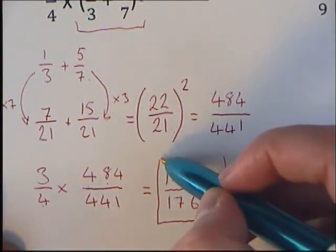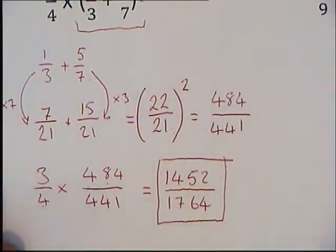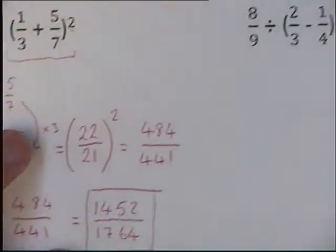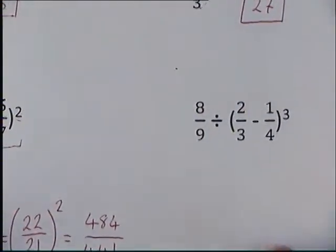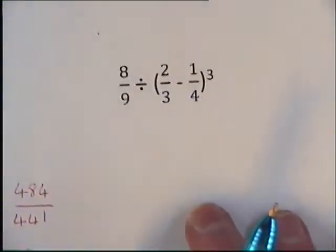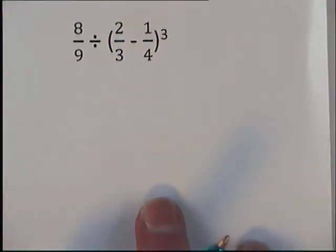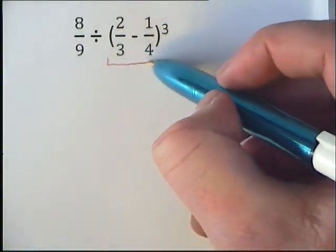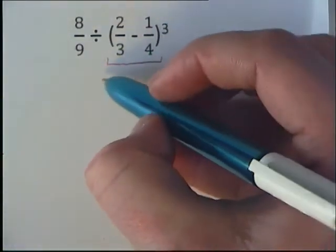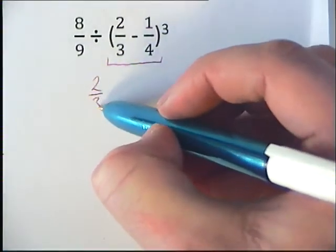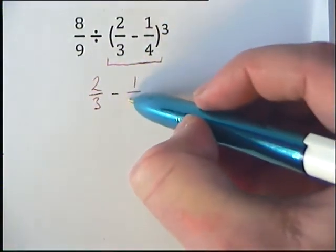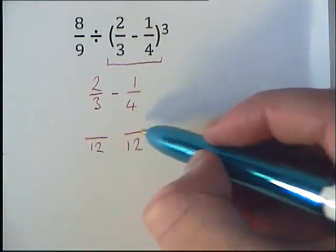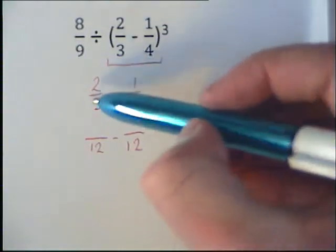Final question, question 4. Very similar to question 3, we're going to deal with our bracket first. So we're going to pull out our 2/3 minus 1/4. Need to make our denominators the same, so 12 on the bottom.